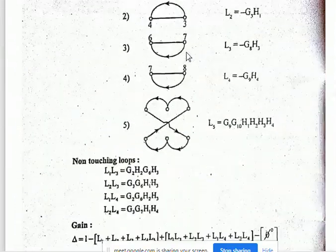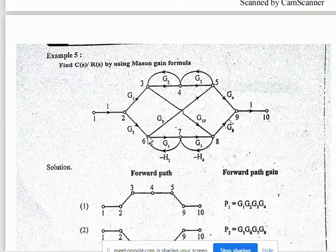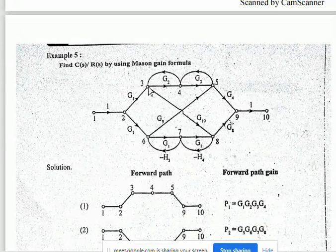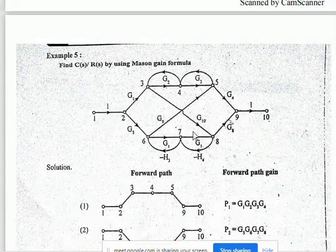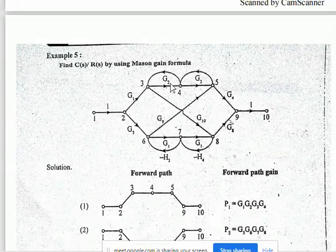We observe there is another loop: starting from node 6, going 6 to 5, 5 to 4, 4 to 3, 3 to 8, 8 to 7, and 7 back to 6. It starts and ends at 6. This is loop L5. So we have L1, L2, L3, L4, and L5.